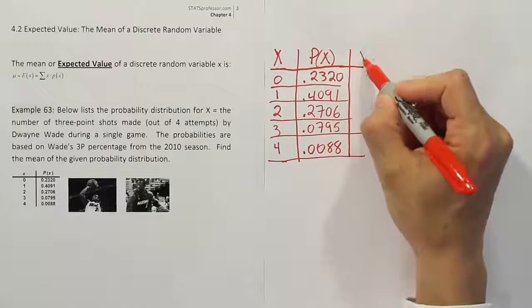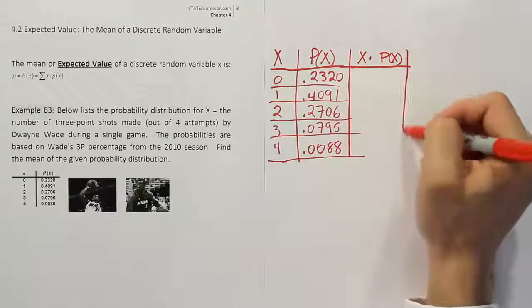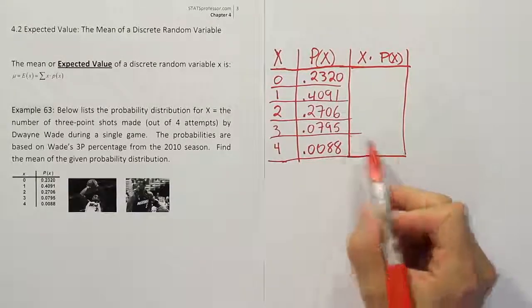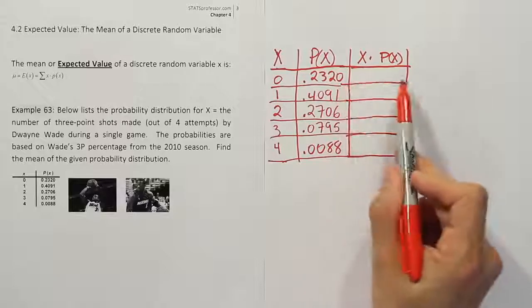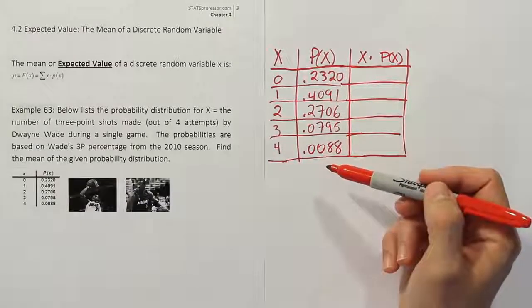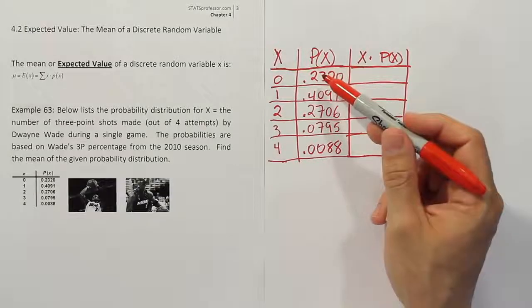Now what we want to do is multiply these two columns together. We should also take a moment to check to see that it is indeed a probability distribution. In other words, we should add up these probabilities to check to make sure that it is a probability distribution. I can just give a quick rough check here.